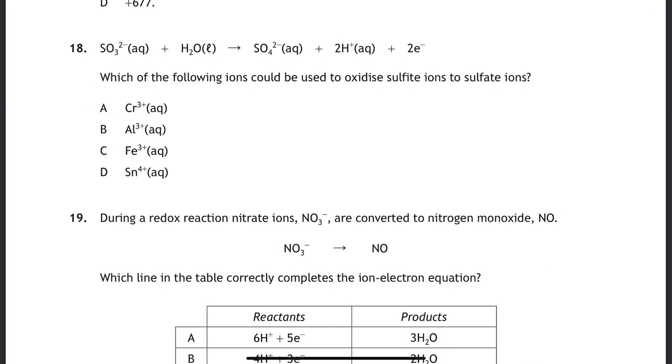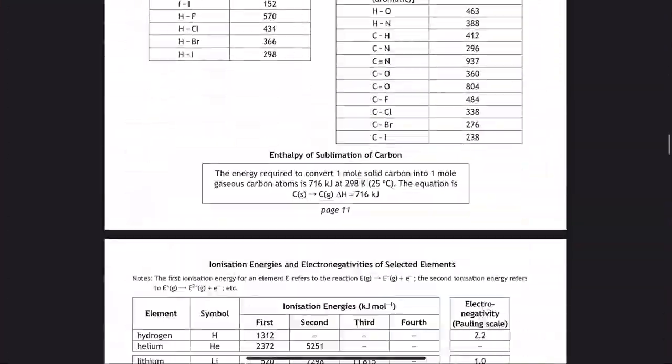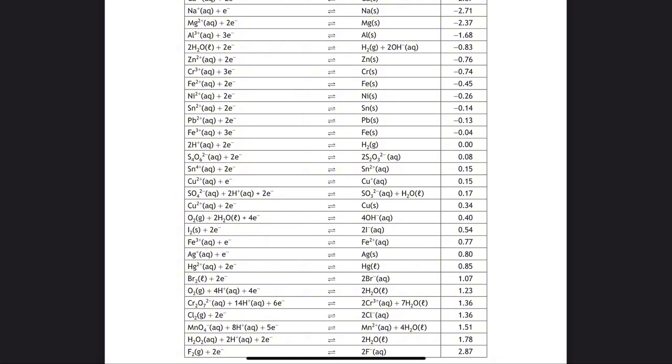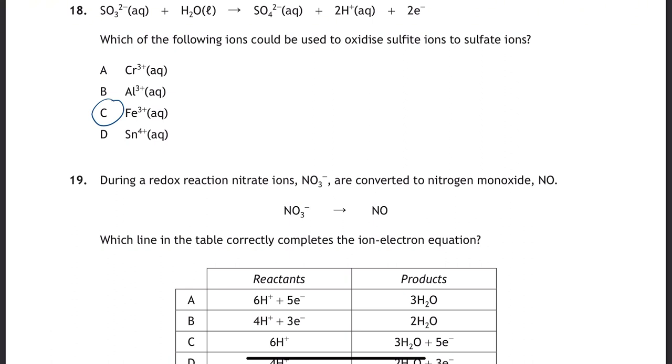Question 18 is tricky, but if you can use something as an oxidizing agent, it needs to be below the reaction you're looking to do on the left, because the best oxidizing agents are at the bottom left of the electrochemical series. If we look at the electrochemical series and find the reaction at 0.17 reduction potential, we're looking for the substance below that reaction on the left. The one below that is Fe3+. Best oxidizing agents bottom left, best reducing agents top right.